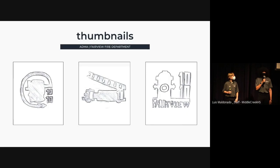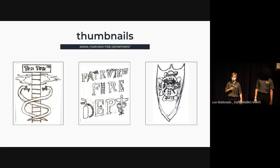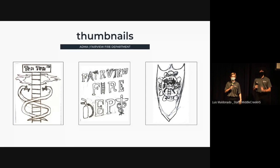For my first sketch, I wanted to reinvent the caduceus symbol by incorporating firefighting elements. The snakes are now hoses, the wings are now flames, and the words 10-10 sit proudly on top of the ladder. For my second sketch, I wanted to change some of the letters that spell out Fairview Fire Department to capture some common tools used by firefighters, including a fire axe, a halogen tool, and a fire extinguisher. The letters that were not changed are in a time-honored font used by most fire stations to add to the theme.